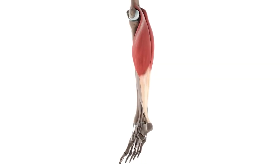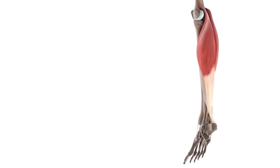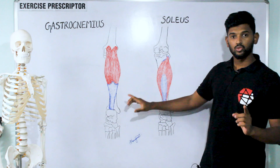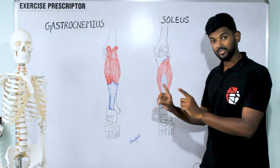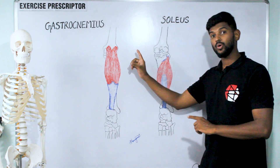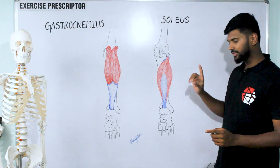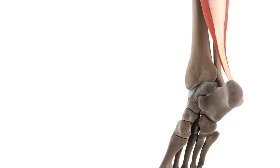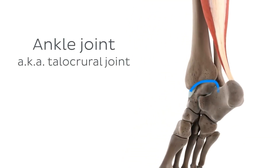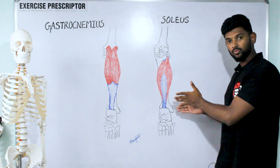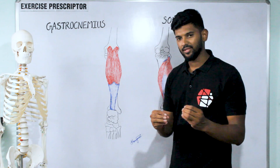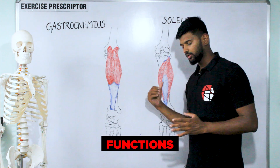The major difference between these two muscles is that gastrocnemius is a two-joint muscle — it crosses both the knee joint and the ankle joint, so it has a function in both joints. Soleus is a one-joint muscle — it crosses only the ankle joint, so it contributes to function only at the ankle joint.